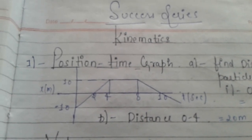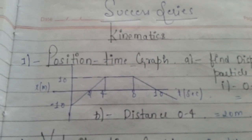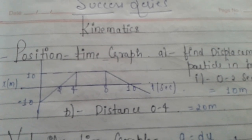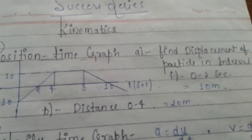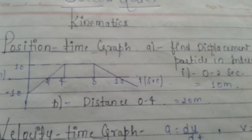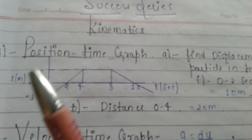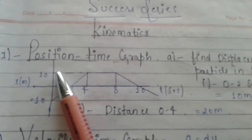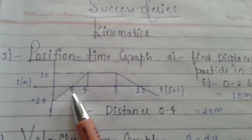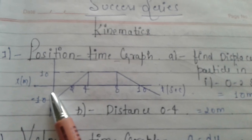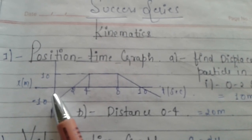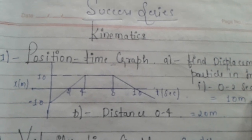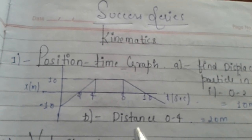If a particle's position is plotted against time, we can calculate values from the graph. For example: find the displacement of a particle in the interval 0 to 2 seconds. We can see that at 0 seconds the particle is at 10 meters, and at 2 seconds the particle is at 0 meters. So the total displacement, final minus initial, is −10 meters.